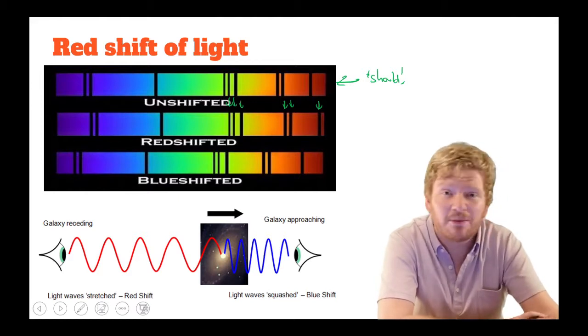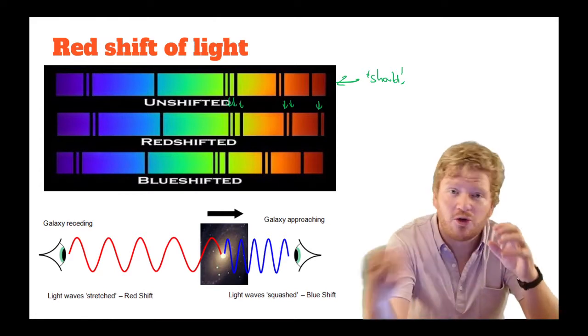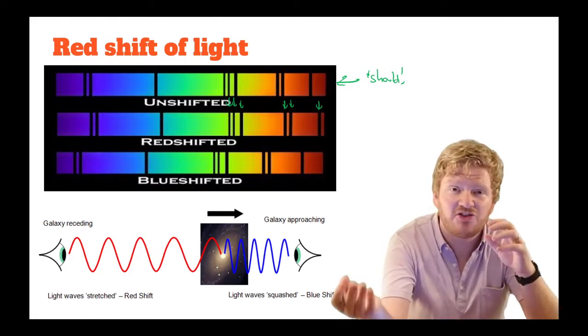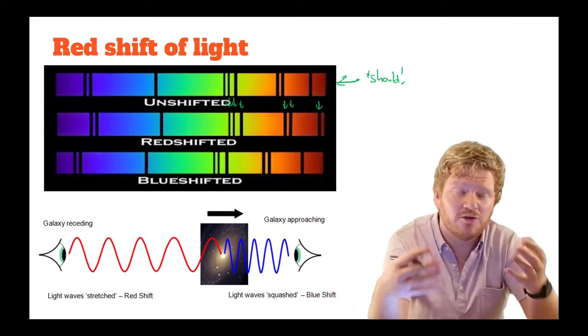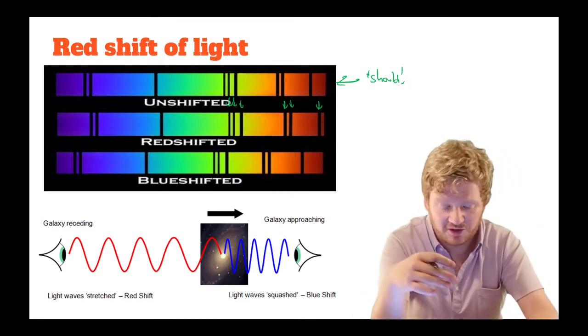And a bunch of other things. Speed cameras as well, they use a radio wave, they fire it at your car. The more the light comes back red shifted, the more we know that your car is speeding. If the car's coming towards you, the more it's blue shifted, the more we know it's speeding.